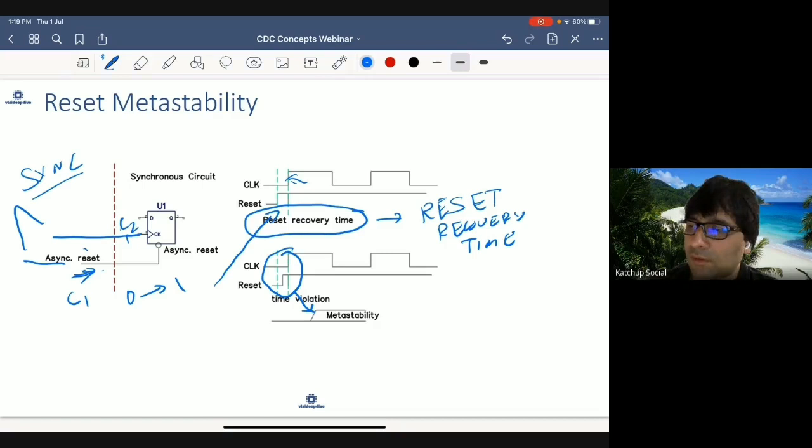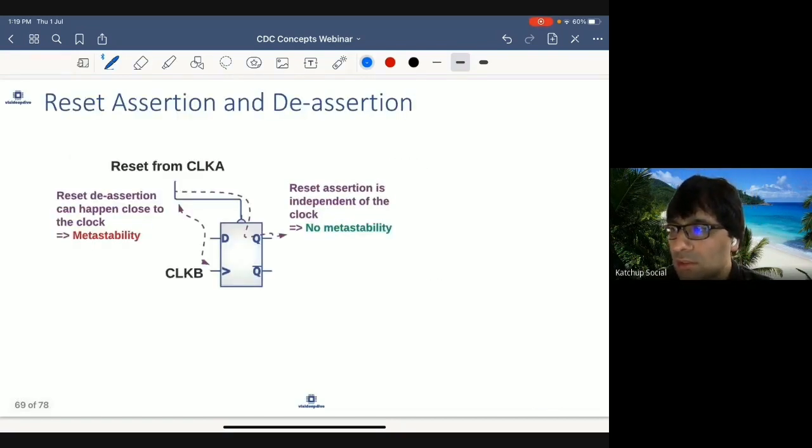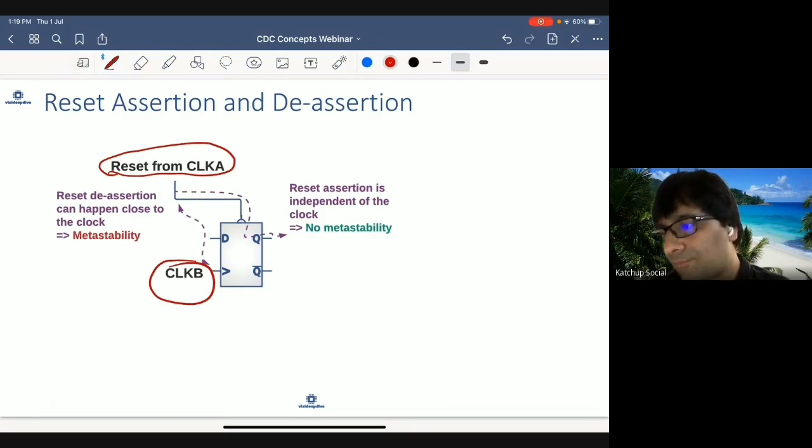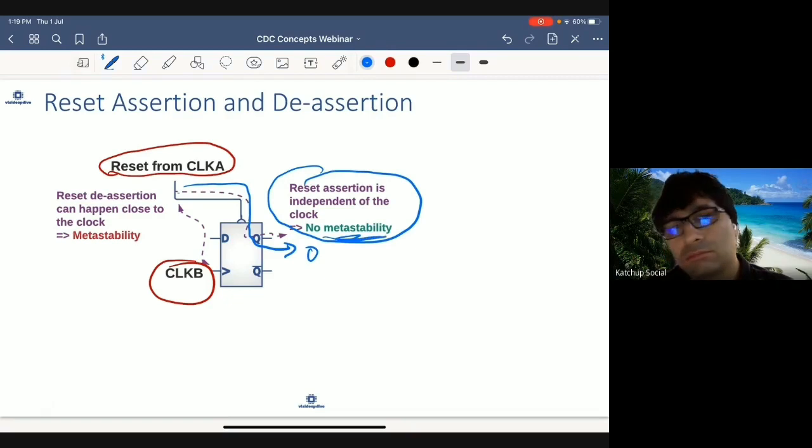Now what happens when the clock domains are not the same? So in this case, reset is coming from clock domain A while on this flop clock domain is B. Now let's talk about assertion. Assertion is independent of the clock. So you assert the reset here, the value directly goes to the output independent of the clock. So reset assertion is independent of the clock, so no metastability. No problem.